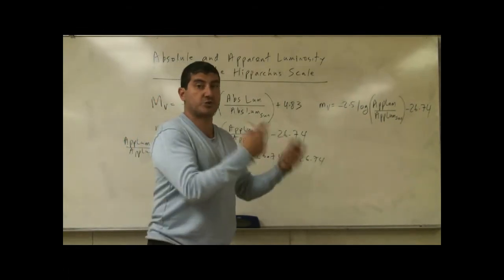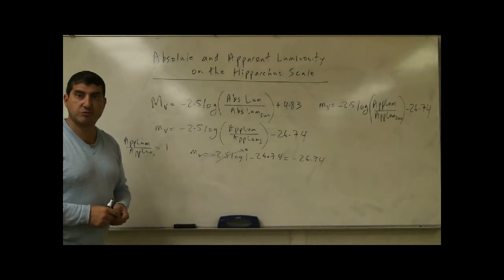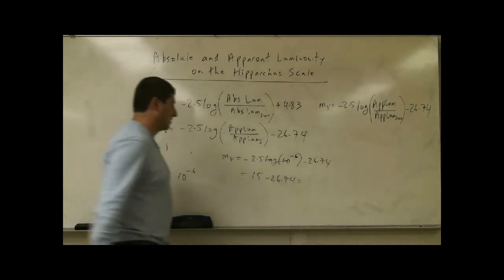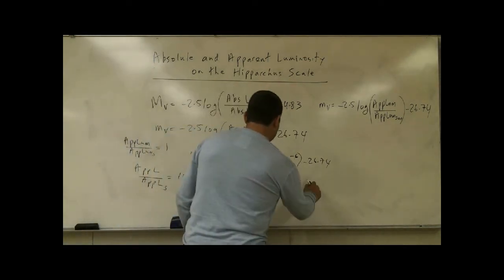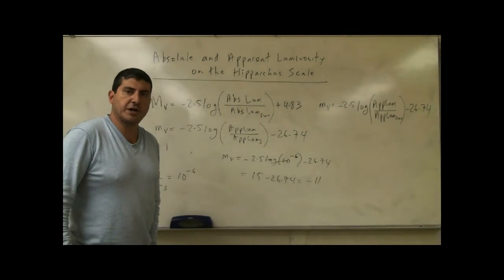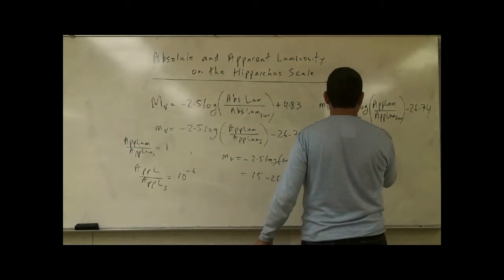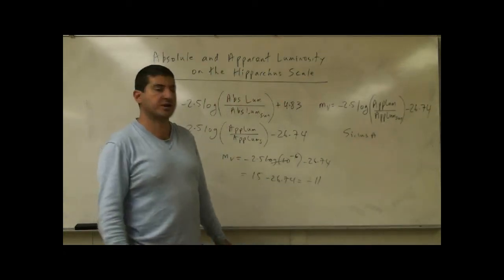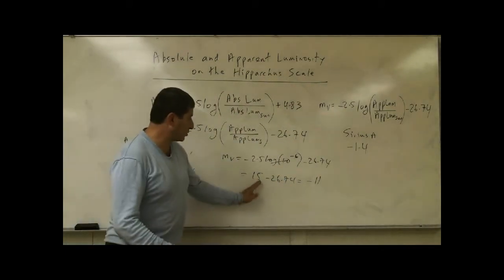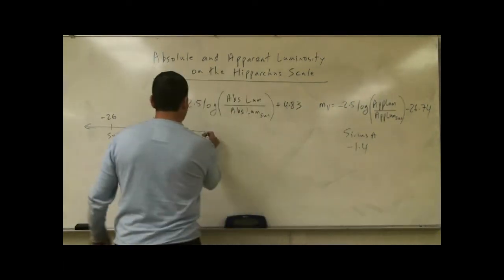Any star that looks just as bright as the sun would get negative 26.74, but no other star appears that bright — the sun overshines everything else. All other stars look much, much dimmer. The brightest star we know of in apparent terms is Sirius A, which has an apparent magnitude of negative 1.4 on the Hipparchus scale.